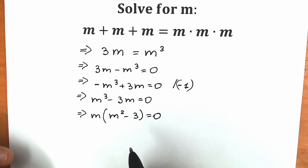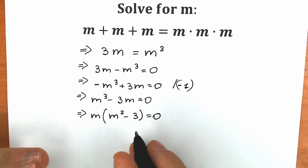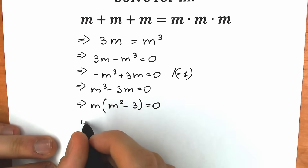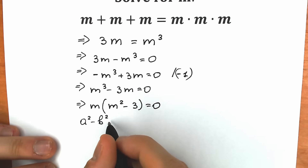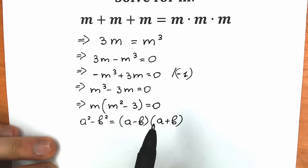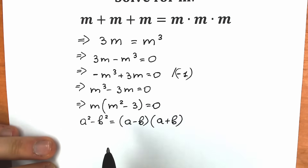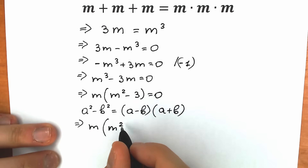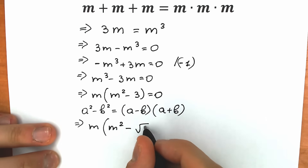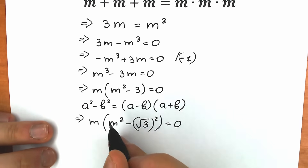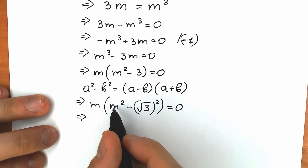How can we factor m squared minus 3? Let's remember the difference of squares formula: a squared minus b squared equals (a minus b)(a plus b). We can write the 3 as the square root of 3 squared, giving us m squared minus (√3)² — a difference of two squares.